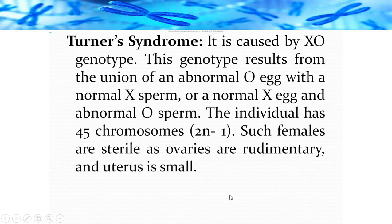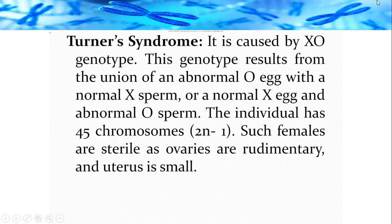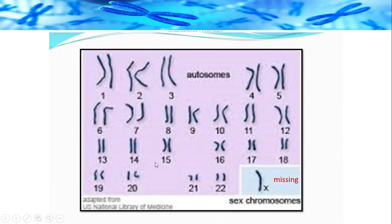Turner syndrome is caused by the XO genotype. This results from the union of an abnormal O egg with a normal X sperm, or a normal X egg with an abnormal O sperm — where O means total absence of the chromosome. The individual has 45 chromosomes, which is 2n−1, called monosomy. Since there is no Y chromosome, the individual is female, but only one X chromosome is present. Such females are sterile, have rudimentary underdeveloped ovaries, and a very small uterus. The karyotype shows one X chromosome with the second marked as missing — the XO condition.